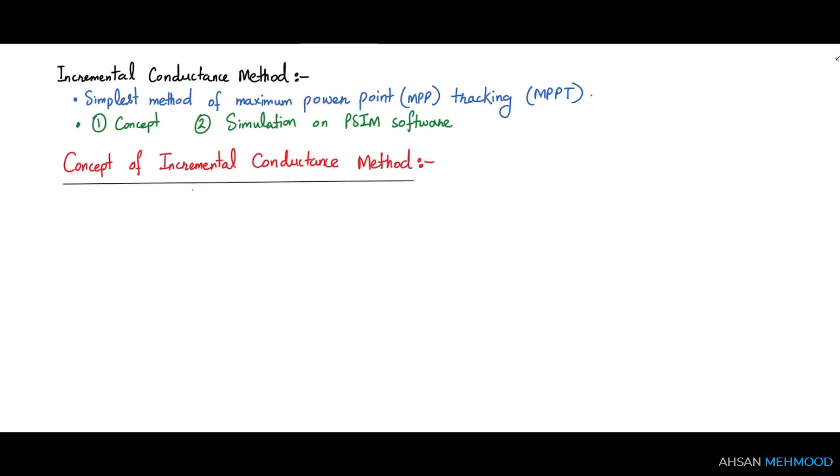In this video we will look at the incremental conductance method, which is one of the simplest methods of maximum power point tracking. We will start by learning the concept for this method and then use PSCM software to simulate it. If you already know the concept, you can skip this section and go straight to the simulation.